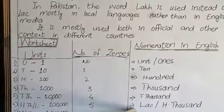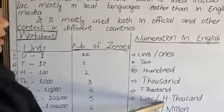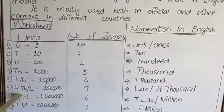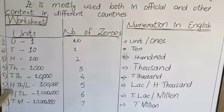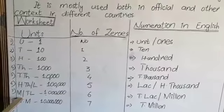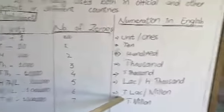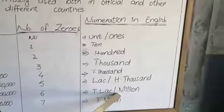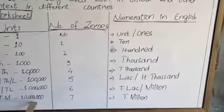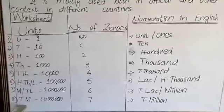The next is lakh, or 100,000. Lakh is used in Pakistan while 100,000 is the international term. It has five zeros and is denoted by H.TH in international notation. The next is million, or 10 lakh, which has six zeros — we use '10 lakh' in Pakistan and 'million' internationally. The last term is 10 million, which has seven zeros and is denoted by T.M.